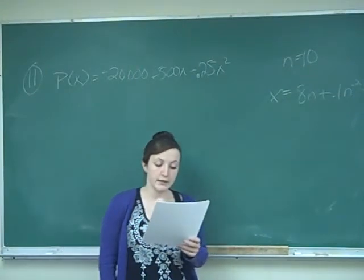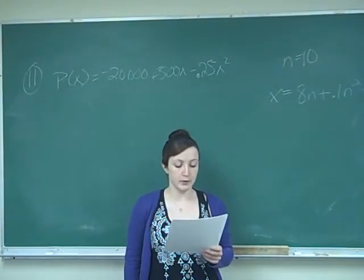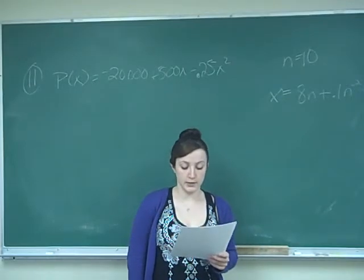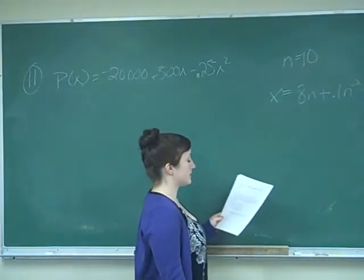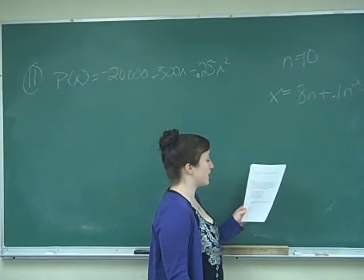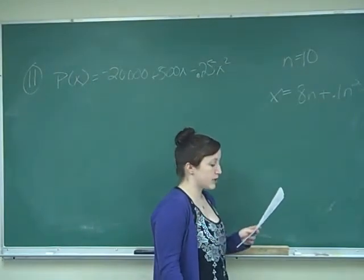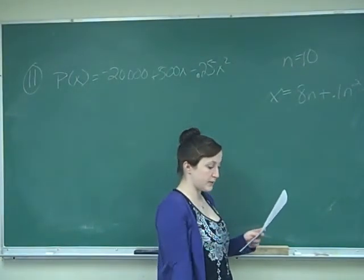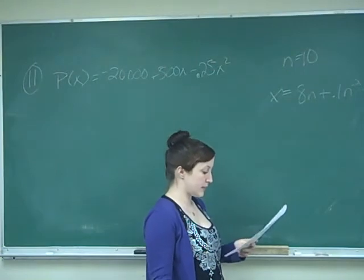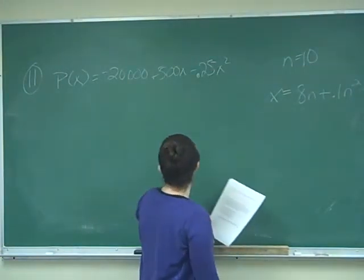In addition, the value of x is a function of the number of assembly line workers according to the formula x equals 8n plus 0.1n squared. It says use the chain rule to find the rate at which the profit is changing with respect to n when there are 10 workers at the assembly line.